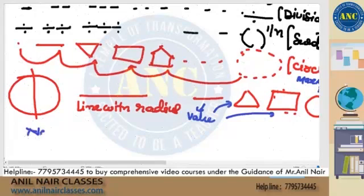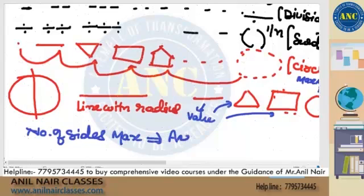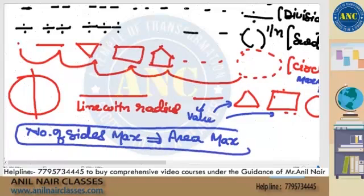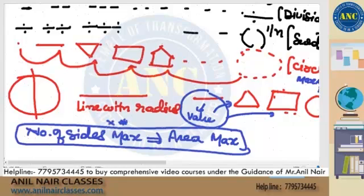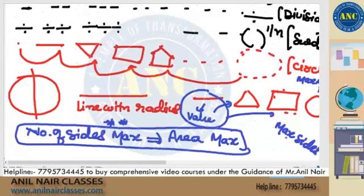As the number of sides increases, the area will be maximum. For a given definite perimeter value, the area will be maximum when the shape has the most sides. For example, if I give you a line of length 12 cm and ask you to make a triangle, a quadrilateral, or a circle — the circle will have the maximum area. Number of sides maximum means area will be maximum.